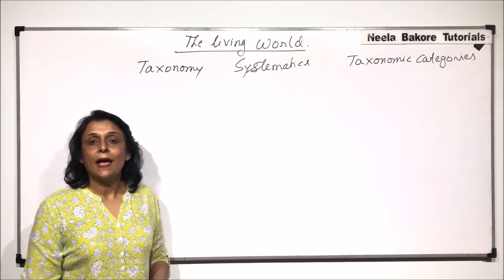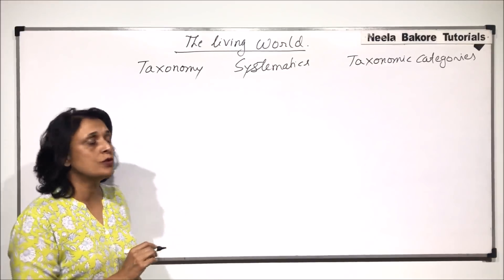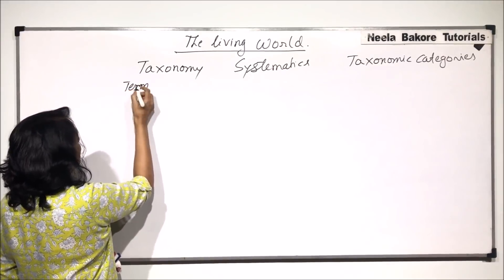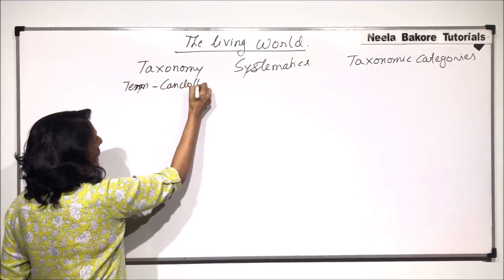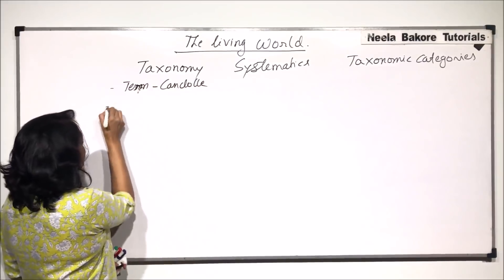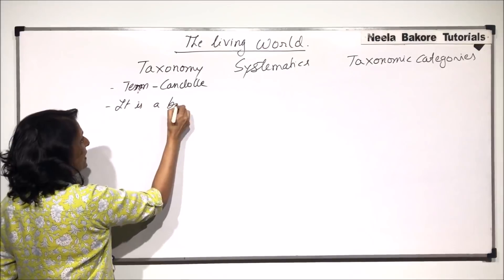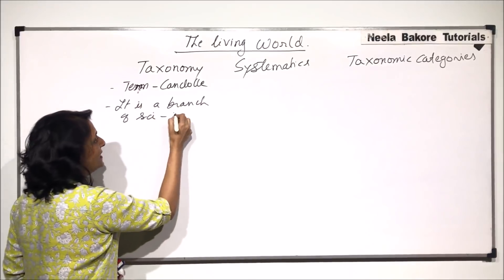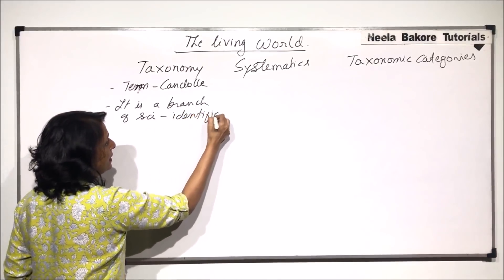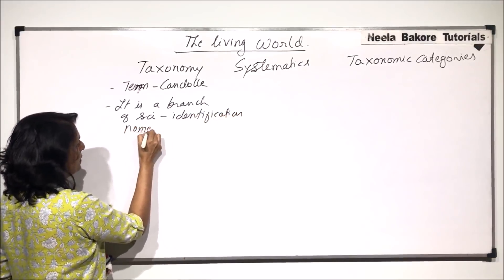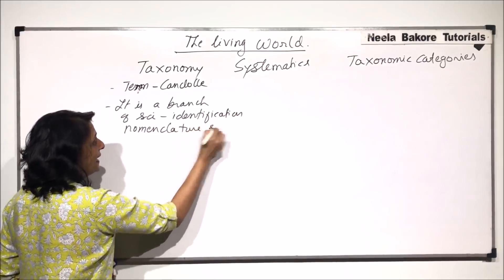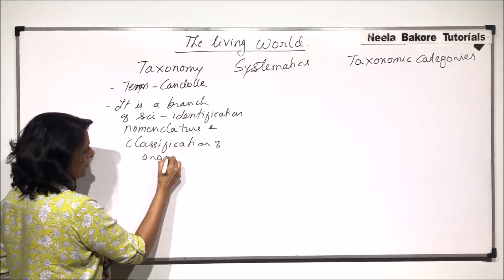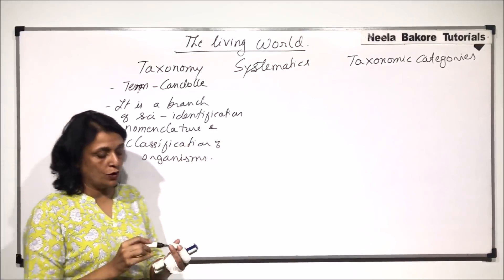Let us first understand the meaning of these terms. The term taxonomy was given by Candolle, and basically taxonomy is defined as the branch of science which deals with identification, nomenclature, and classification of organisms. This is what we mean when we use the word taxonomy.